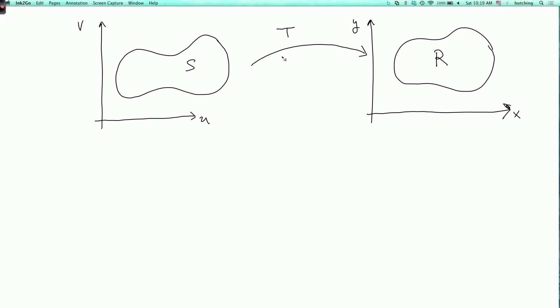So in the transformation T, x is some function g of u and v, and y is some function h of u and v.